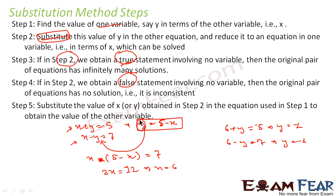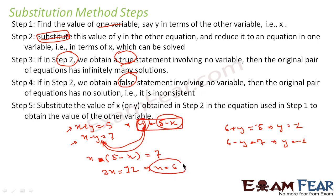To summarize: first, find the value of y in terms of x, or x in terms of y — whichever is convenient. Then substitute that value into the second equation so it becomes entirely in terms of one variable. From the example, substituting y equals 5 minus x into x minus y equals 7 gives x equals 6 as the answer.